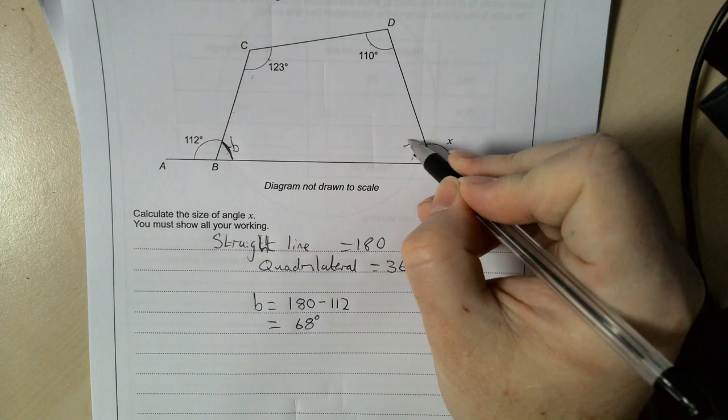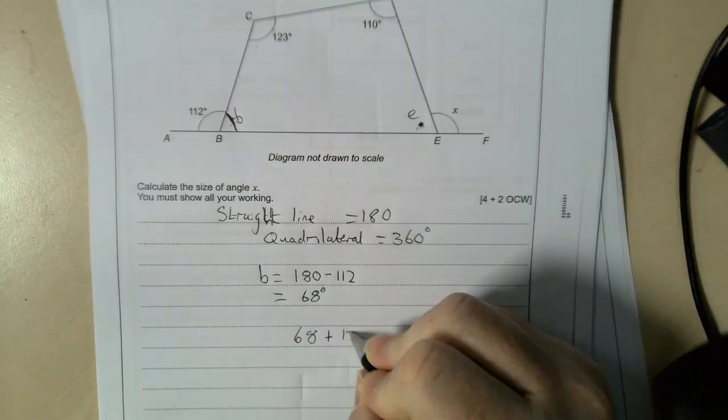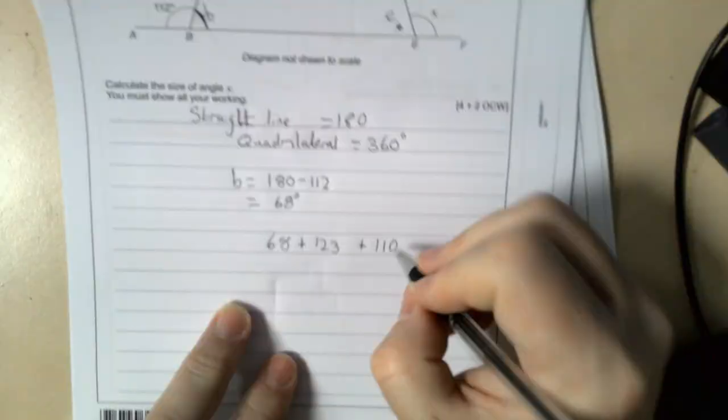And they add up to 360. So I'm going to say 68 plus 123 plus the top angle, which is 110. I'm going to work out the total for them three.